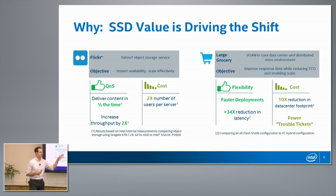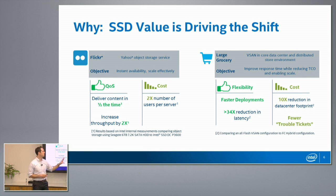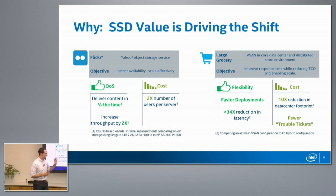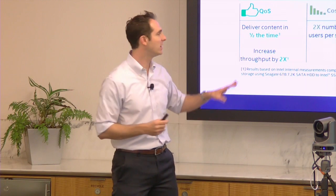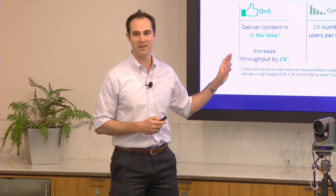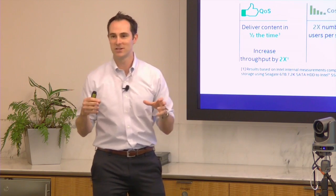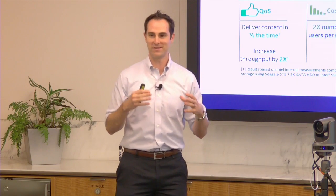The other example is a vSAN deployment with a large grocer we're not allowed to name. They deployed a software-defined storage model and were able to see huge latency reductions because of flash media versus rotating media, plus a huge reduction in their data center footprint — a big win from a cost perspective as well. The key point is that both of those are software components enabling the performance of the media. It's not just the media being sprinkled like pixie dust. There is a software lift involved.